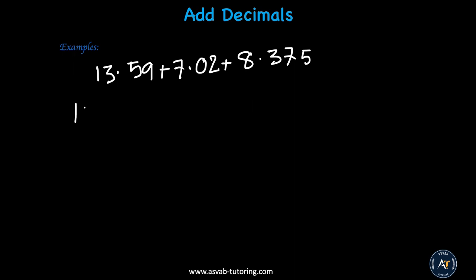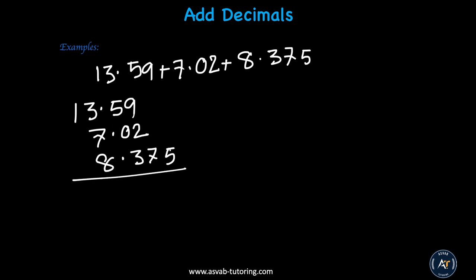Let's write down: 13.59 plus 7.02 plus 8.375. Line them up by the decimal. The last number has 3 digits after the decimal, but the rest have 2, so you can fill out with zeros. Now add them: you get 5. 7 plus 2 plus 9 is 18 — write 8, carry 1. 5 plus 3 plus 1 is 9. 8 plus 7 plus 3 is 18 — write 8, carry 1. 1 plus 1 is 2. The answer is 28.985.